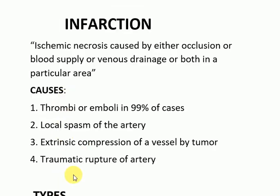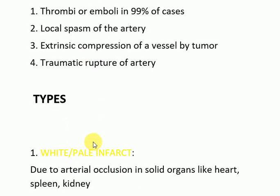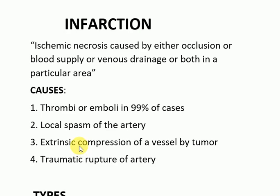In summary: the types of infarct are white or pale, occurring due to arterial occlusion in solid organs, and red or hemorrhagic, occurring in loose tissues, areas with double circulation, or where there is re-establishment of a previously occluded vessel. Please like, comment, share with your friends, and subscribe to my channel for more videos.